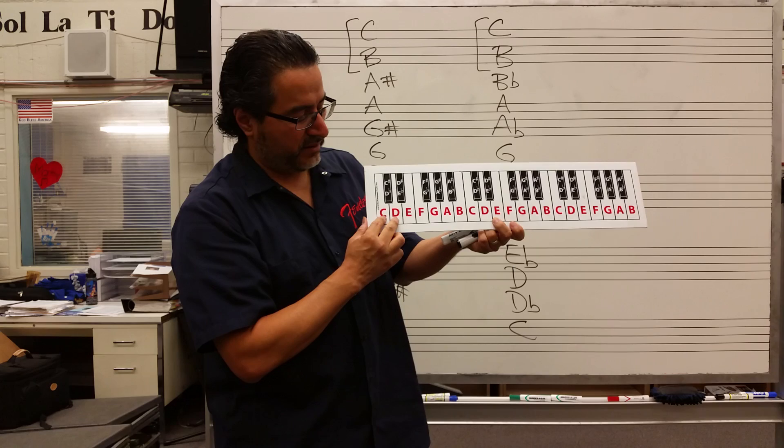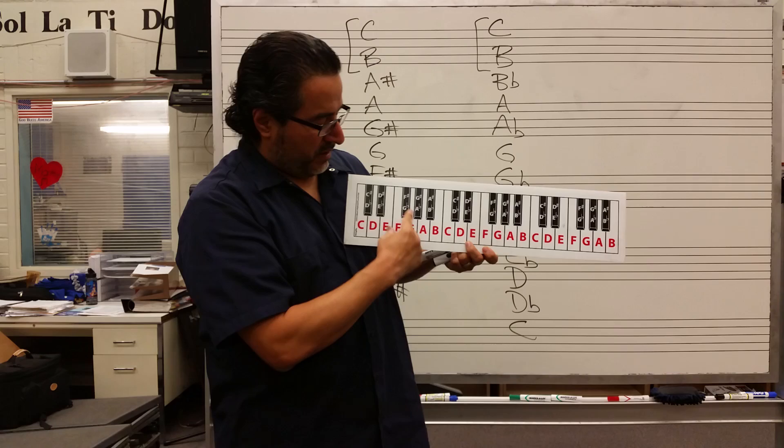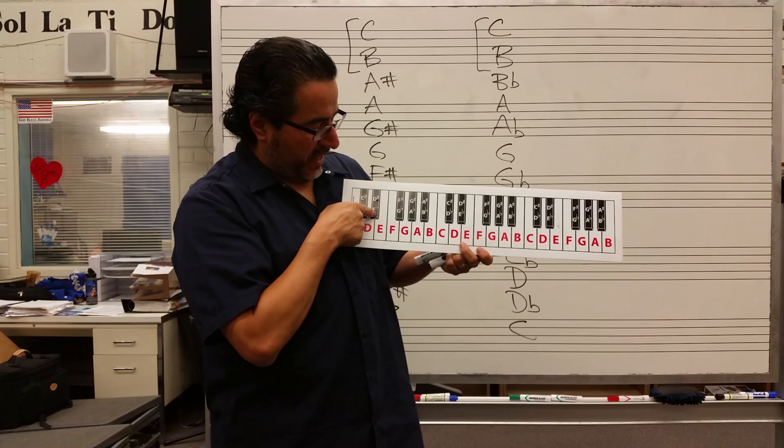When we talk about whole steps, double it — you move two times. So if I'm on C and I move to D, that's a whole step. There's one key in between these, so one and two is a whole step. From D to E is also a whole step.